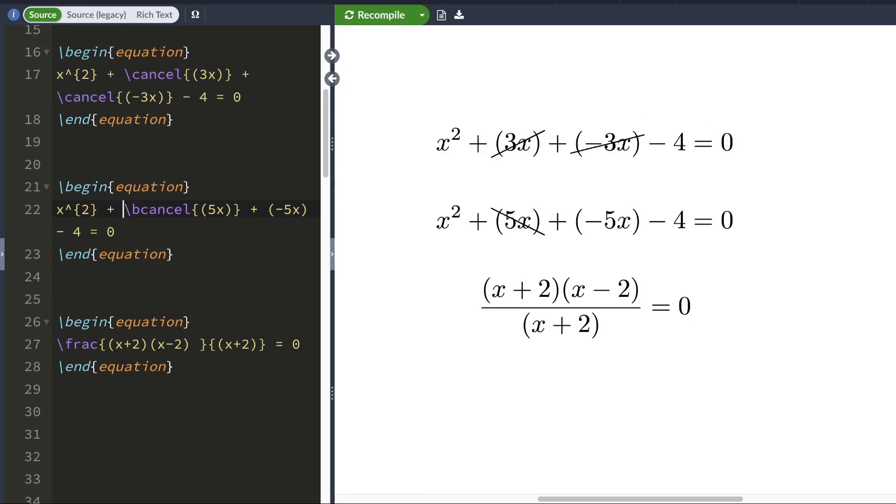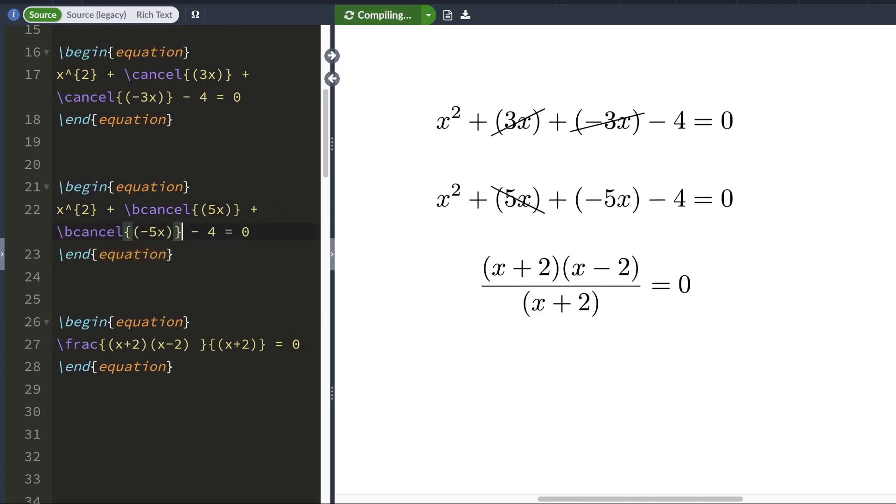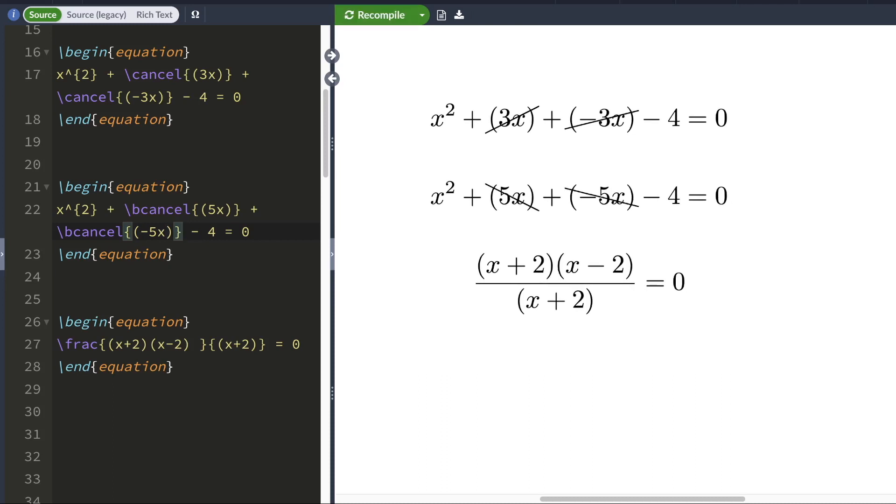You can use the cancel command or bcancel command, whichever one you want. I'm going to do the same for this negative 5x here. LaTeX would cancel this out.